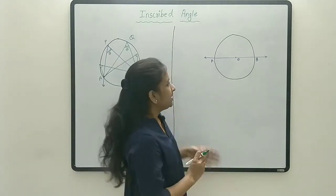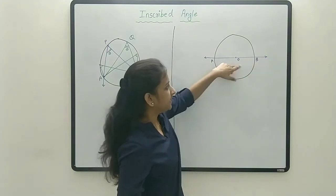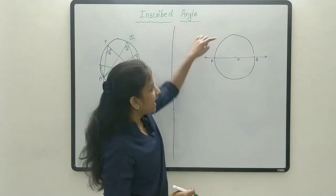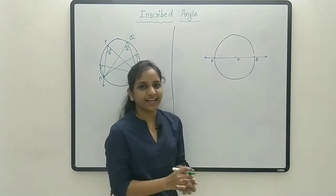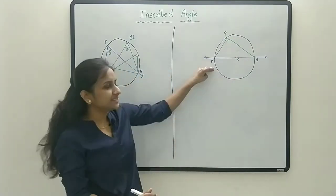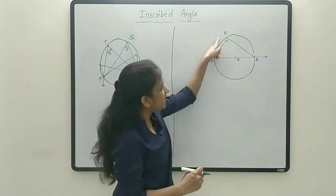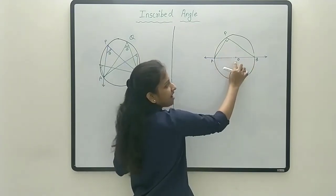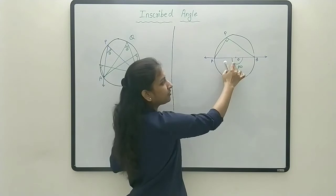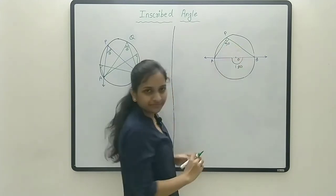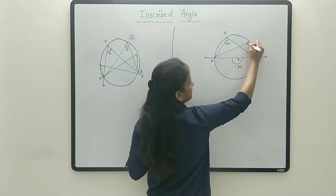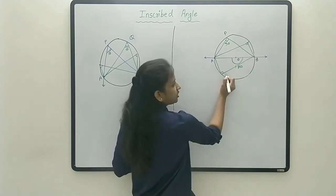The second corollary: AB is a diameter and O is the center, so the diameter divides the circle into two semicircles. The second corollary states that an angle in a semicircle is a right angle. Angle APB inscribed in the semicircle is 90 degrees. Proof: angle APB is the inscribed angle, so it is half of angle AOB. Since angle AOB is 180 degrees (a straight line), the inscribed angle is half of 180, which is 90 degrees. So any angle in a semicircle is a right angle.